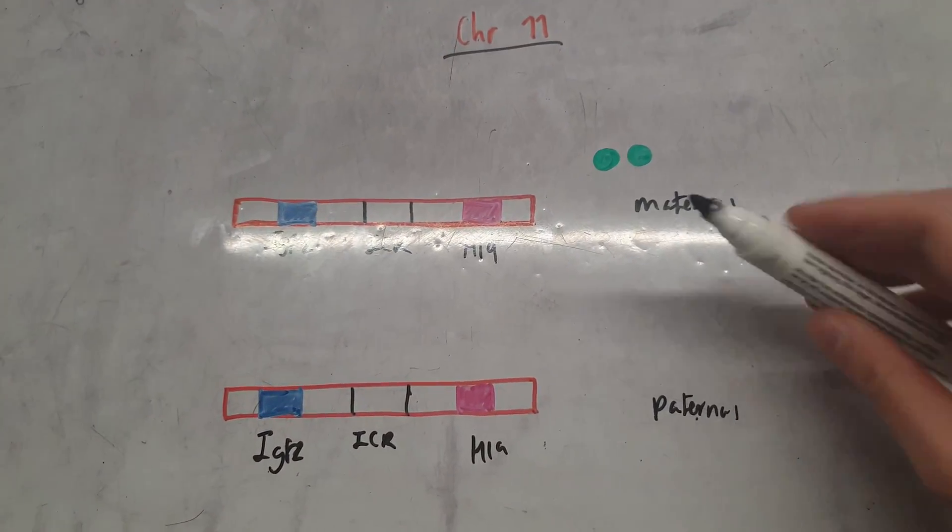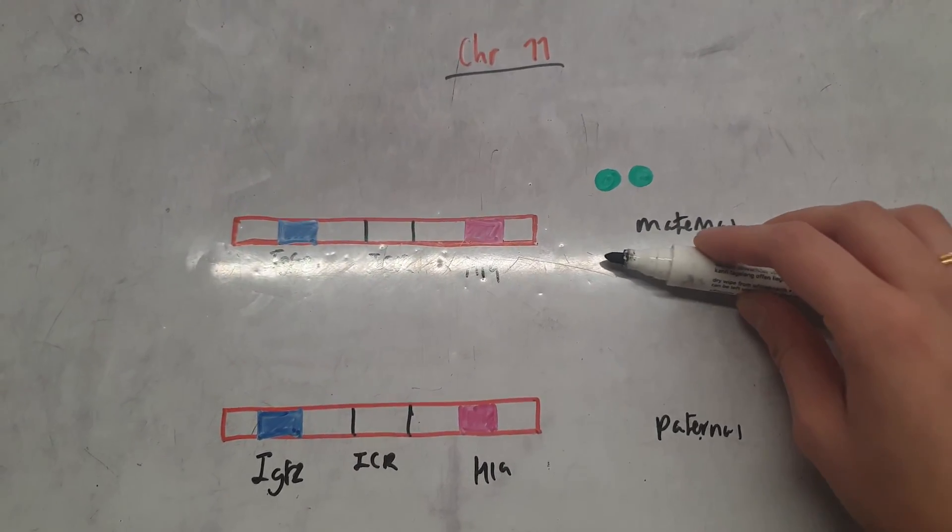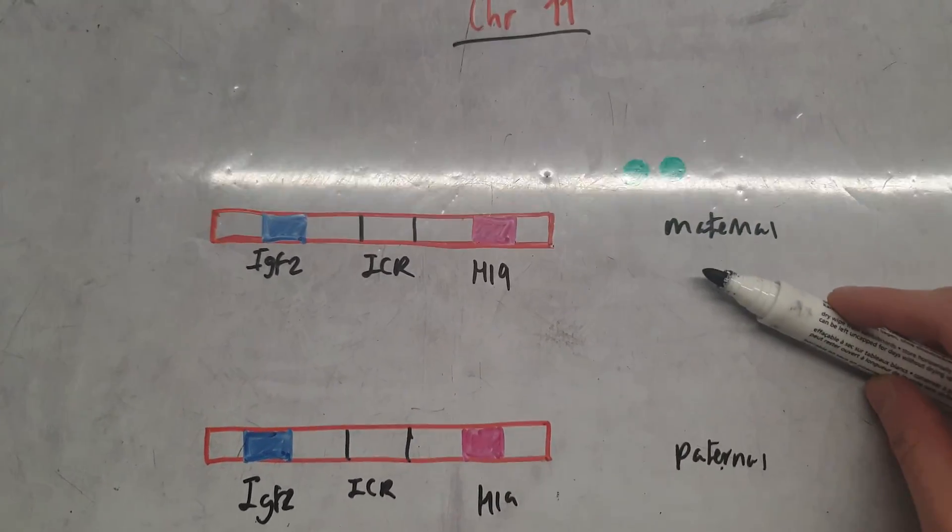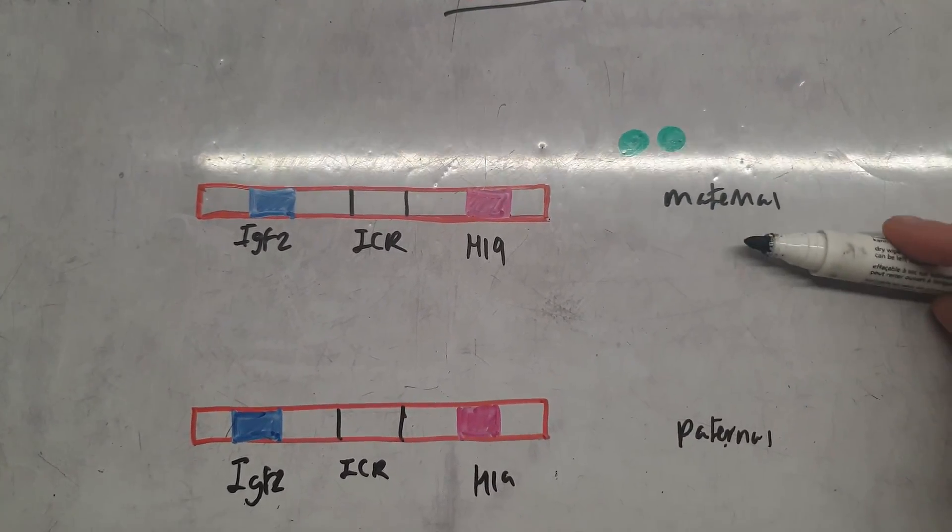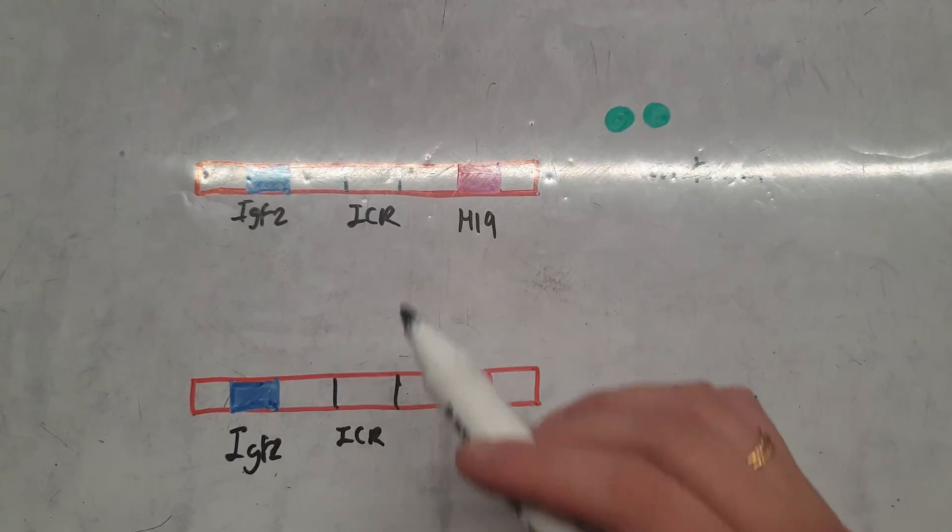So here we have two chromosomes: a maternal chromosome coming from our mum and a paternal chromosome coming from our dad. That's because humans are diploid organisms, so we have two copies of each chromosome and hence two copies of each gene.